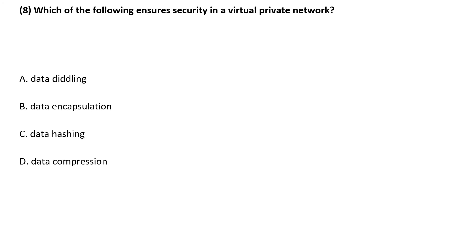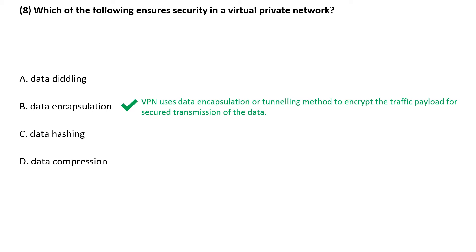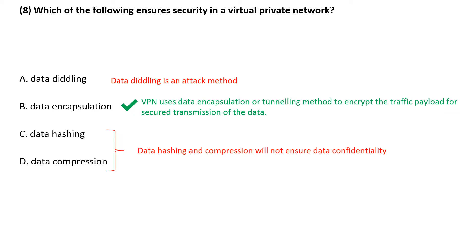Practice question: Which of the following ensures security in a virtual private network? VPN uses data encapsulation or tunneling method to encrypt the traffic payload for secure transmission of data. Data detailing is an attack method, and data hash and compression will not ensure data confidentiality. Data encapsulation is essentially the process of hiding the data.